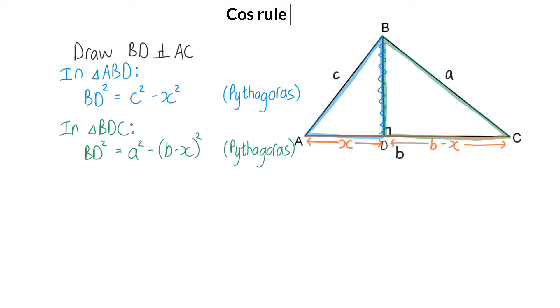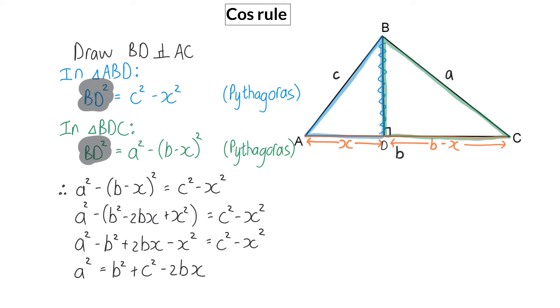And similar to in the sin rule, here we have the two left-hand sides being equal, and that means that I can accept that the right-hand sides will also be equal. And if I now multiply out the bracket, and then get A squared alone on one side, I'm one step away from the final cos rule. This final step is to write the X in terms of cos.